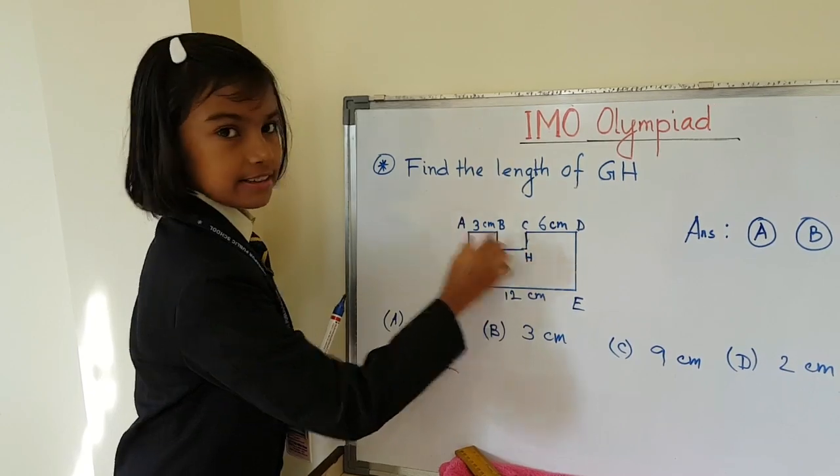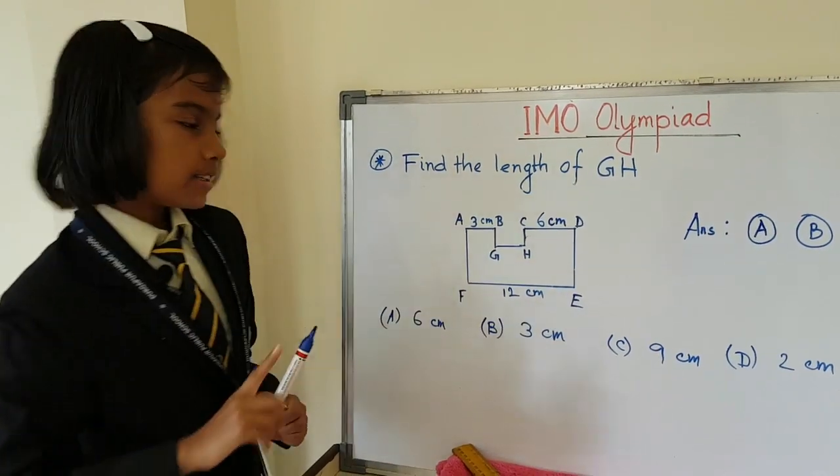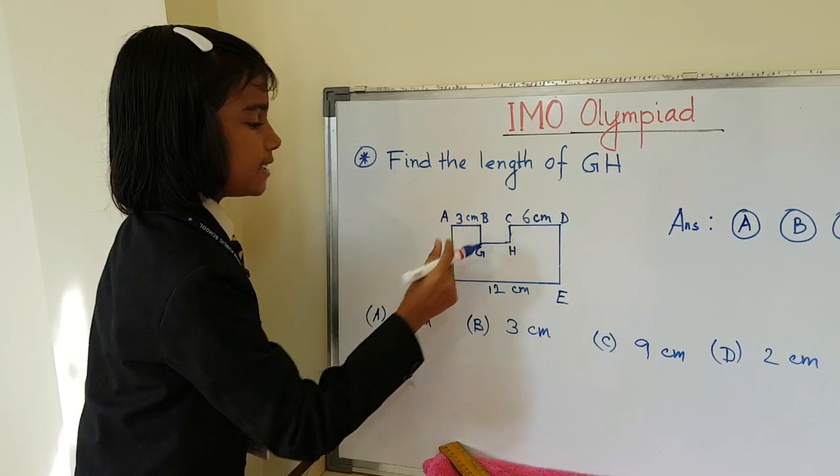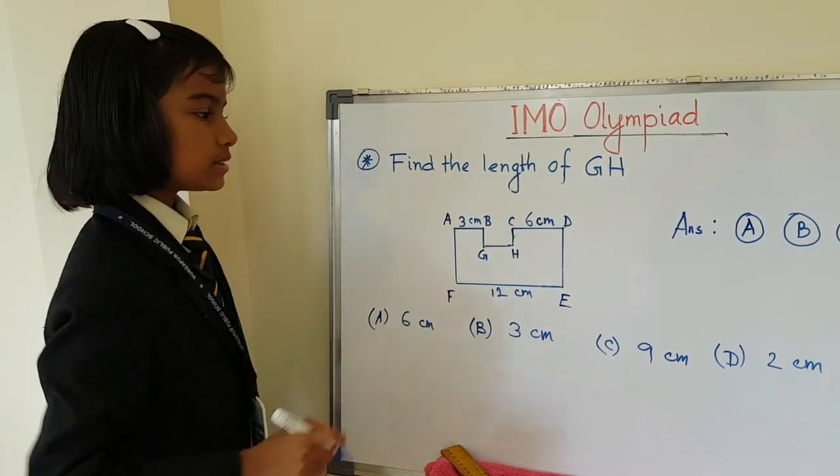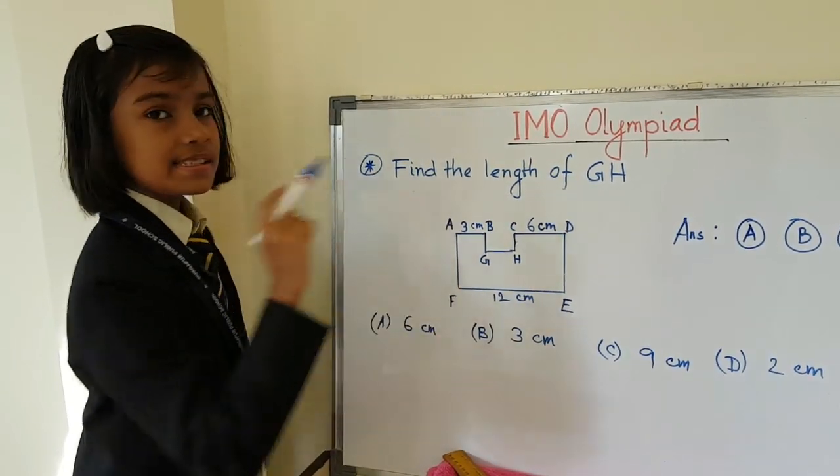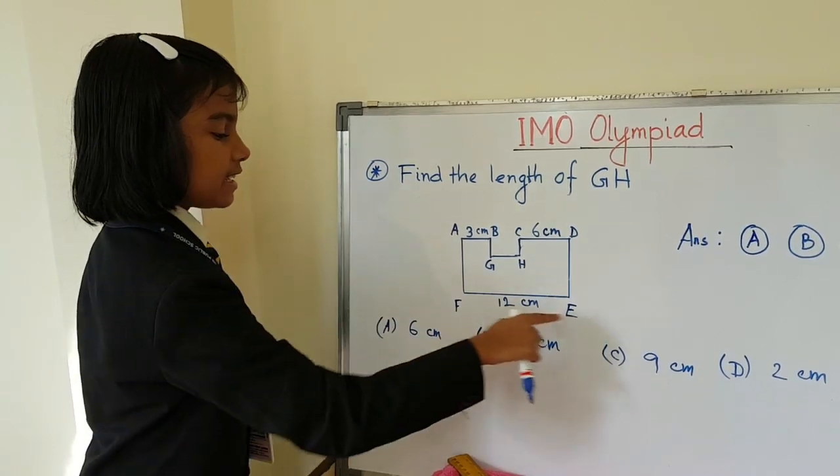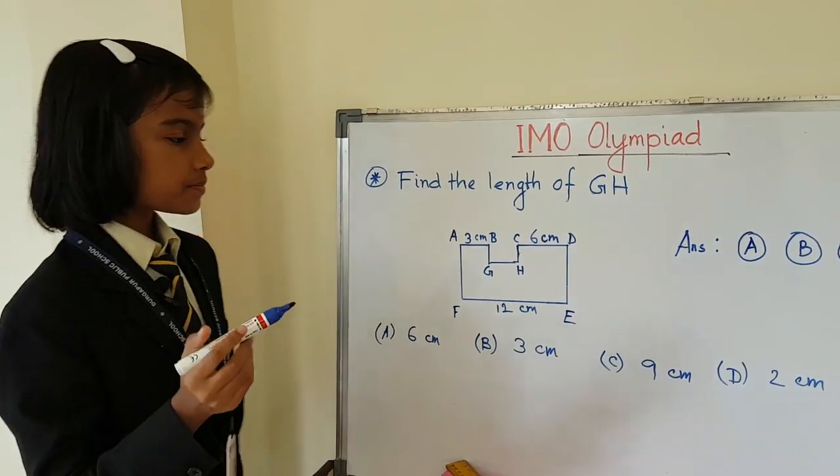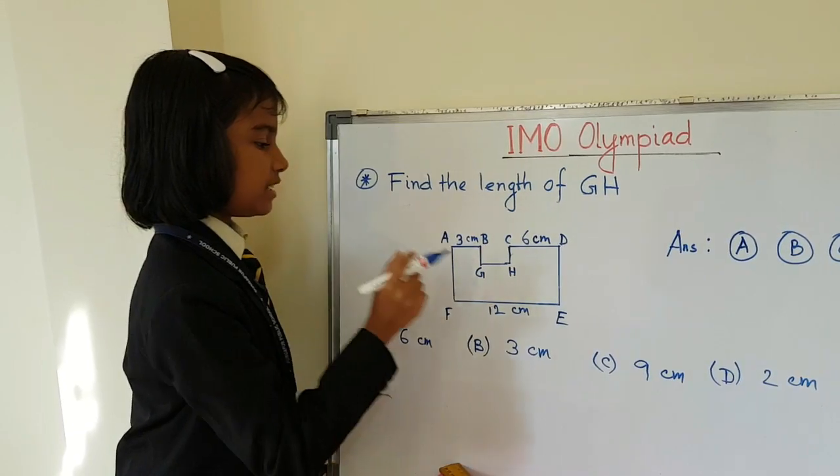AB is equal to 3 cm, CD is equal to 6 cm, and EF is equal to 12 cm. So we have to find the length of this line, GH.